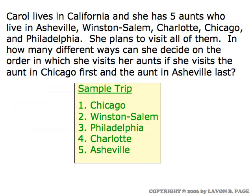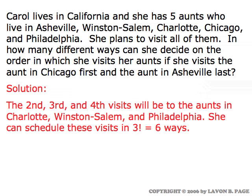In the second variation, Carol has decided she's going to visit the aunt in Chicago first and the aunt in Asheville last. So the question is, how many ways can she arrange her itinerary if she's going to go to Chicago first and Asheville last? In that case, the question is simply how many ways to arrange the other three cities in slots two, three, and four. That's arranging three objects in order — counting the permutations of three objects. Three factorial is six.